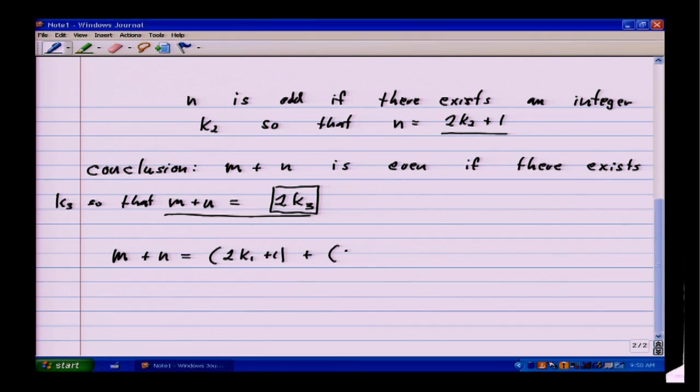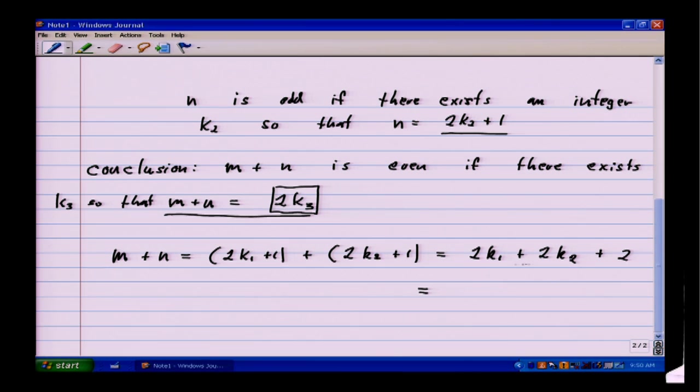Add that to n, which is 2k2 plus 1. If I add, I'll have 2k1 plus 2k2, and 1 plus 1 is also 2. Each of those terms has a 2, so I can factor out the 2. And there I have the form that I wanted. This 2k3 is the form that I wanted, and this fits that form. It's 2 times some integer, and so you could call this k3.